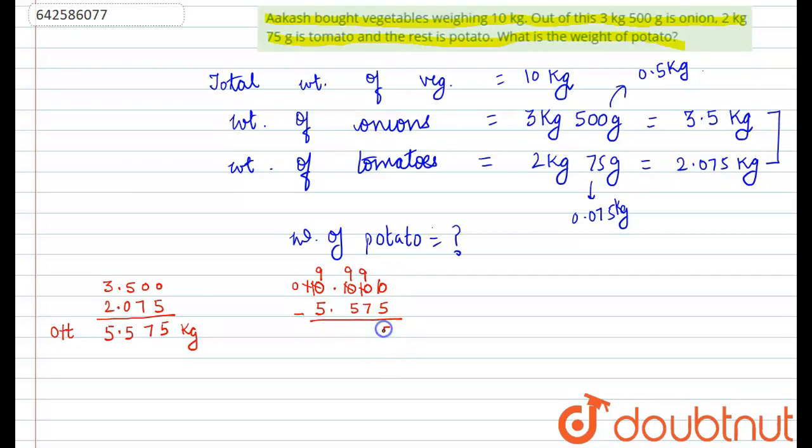So, 5, 9, 7 minus 9 is 2, 5 minus 9 is 4, 9 minus 5 is 4. So, we have 4.425 kg of potato.